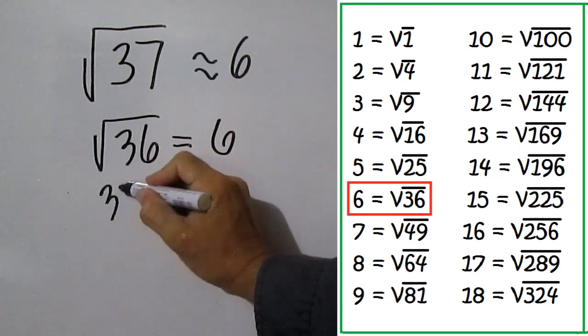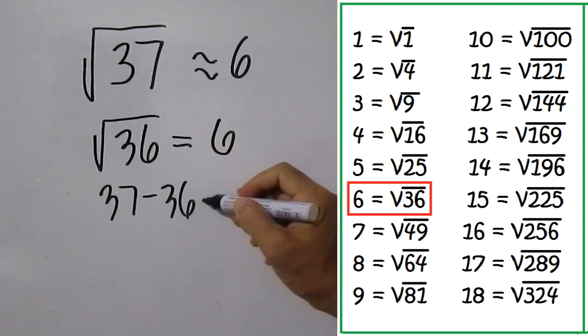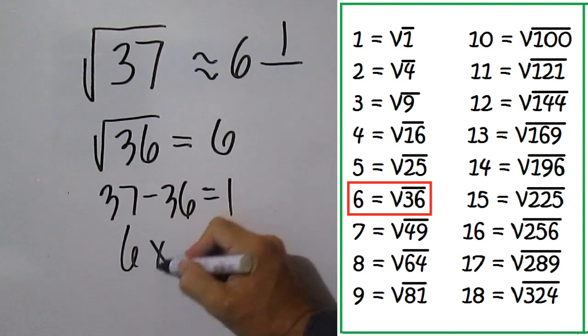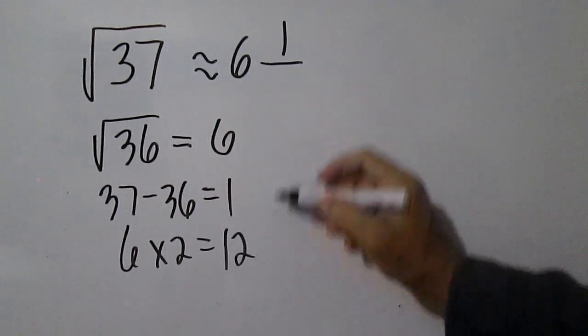Subtract 36 from 37. 37 minus 36 is 1. Then multiply 6 by 2. 6 times 2 equals 12.